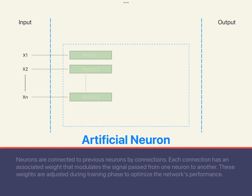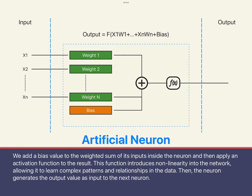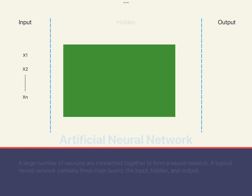For each external data input, the neuron adds a different weight to it. Then it sums up all the external data, adds a bias parameter correction, and sends it to an output function for processing. Because the data processing differs for different neural networks, this output function also has other choices. A complete neural network consists of three layers: input, hidden, and output.